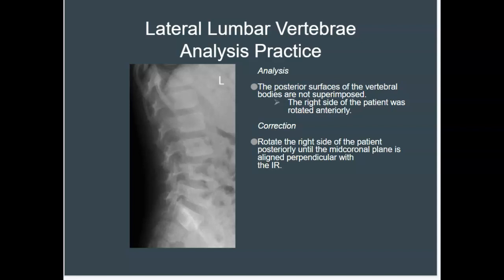In our next image analysis, the patient is actually anteriorly rotated. We do see the posterior surfaces, however when looking at this patient you can see that the 12th rib closest to the IR is anterior to the spine. That tells me that the right side is positioned anteriorly — it's magnified and clearly visible. Looking at your patient and determining which way they are rotated is the best approach, and ensuring that the mid-coronal plane is perpendicular with the IR to achieve proper superimposition is most important.